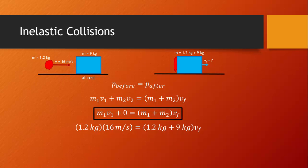Beforehand, all we have is the momentum of the clay: 1.2 kg times 16 meters per second. Afterward, we have one object with a mass of 1.2 kg plus 9 kg moving at some speed vf. Doing the algebra: 9.2 kilogram meters per second equals 10.2 kg times vf. We find that this clay-block system is moving at 1.9 meters per second after the collision.